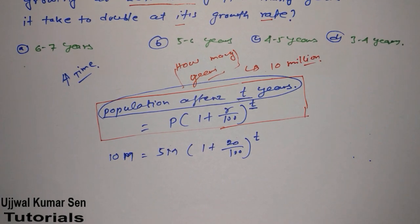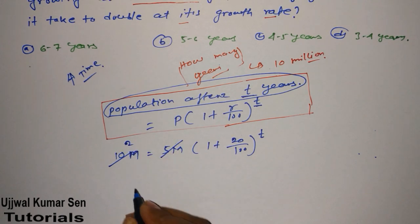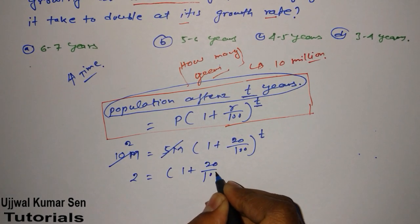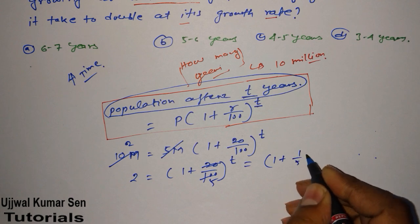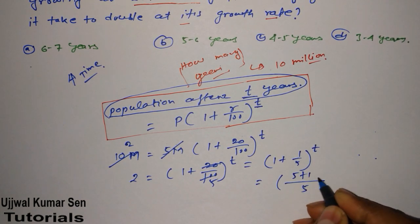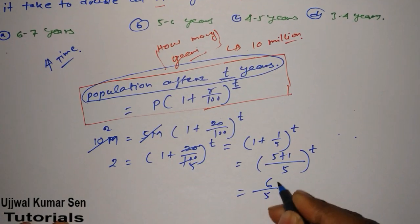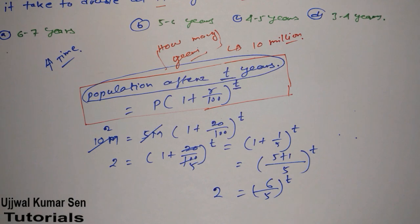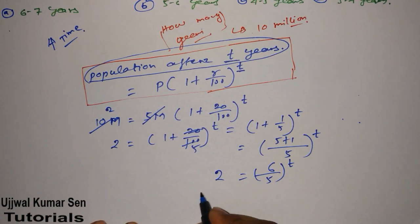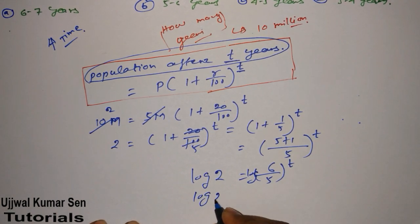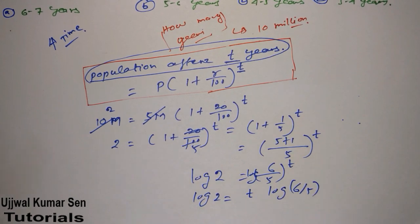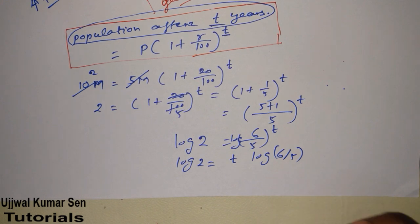How to solve this: 10/5 = 2 equals (1 + 20/100)^t. We can say 2 equals (1 + 1/5)^t, which is ((5+1)/5)^t = (6/5)^t. Now we have to use log. If we use log on both sides, this power will come outside. So log(2) equals t × log(6/5). This is a basic formula. If you don't know about it, then learn about it. This is the rule in case of log and knowing this is really important.